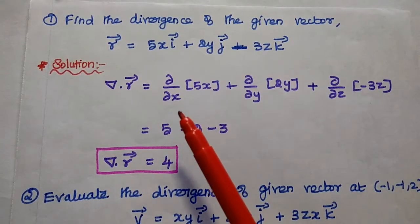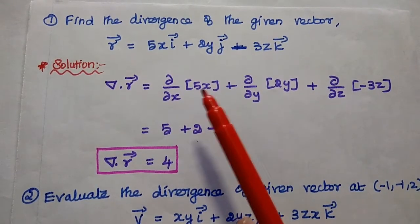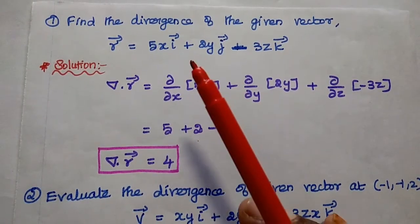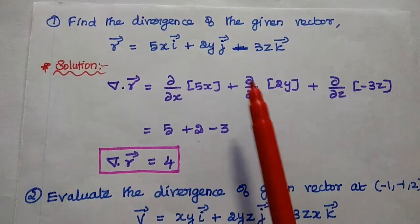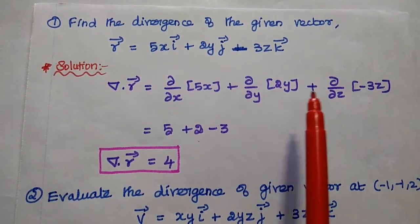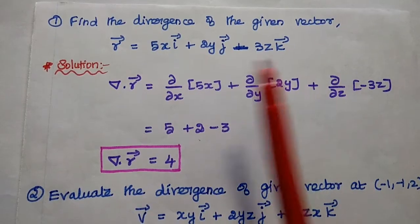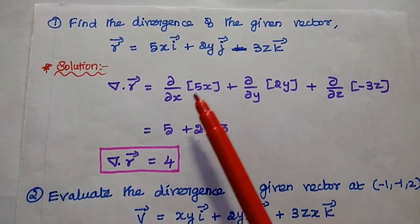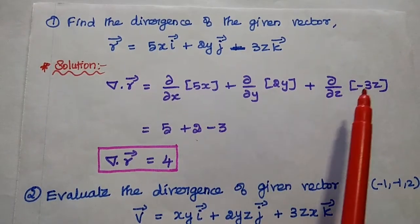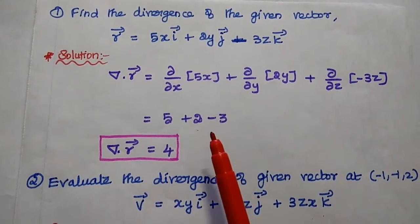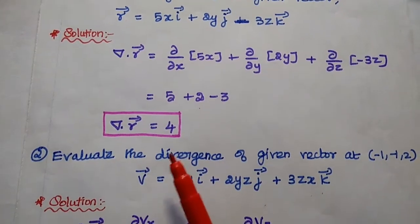Del dot r = ∂/∂x(5x) + ∂/∂y(2y) + ∂/∂z(−3z). The x component is the i component, which is 5x. Differentiating with respect to x gives 5, differentiating 2y with respect to y gives 2, and differentiating −3z with respect to z gives −3. Therefore, del dot r = 5 + 2 − 3 = 4.